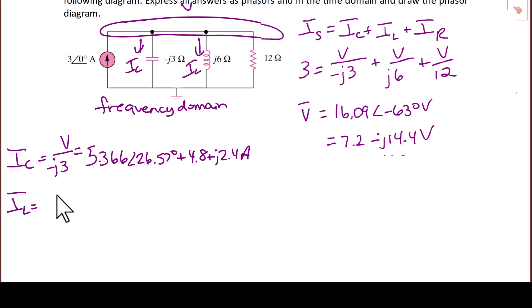Next, we will find the current through the inductor. The current through the inductor is V over J6. V over J6 yields 2.68 with an angle of negative 153 degrees, or in rectangular form, negative 2.4 minus J 1.2 amps.